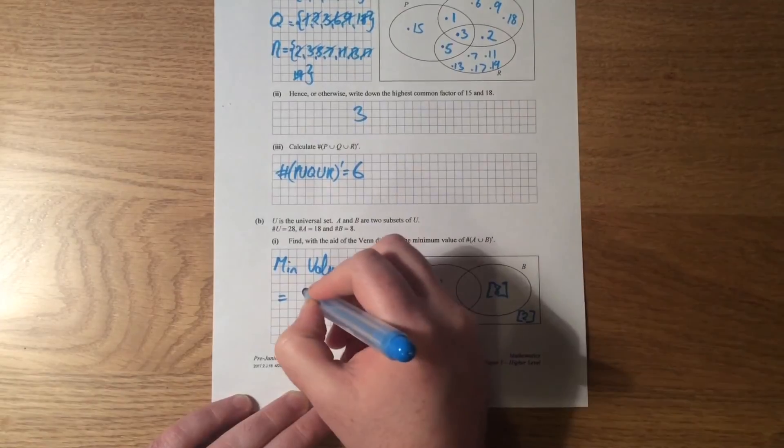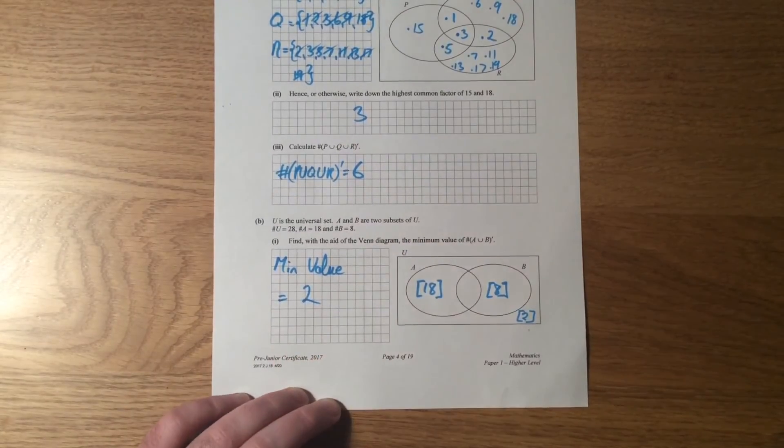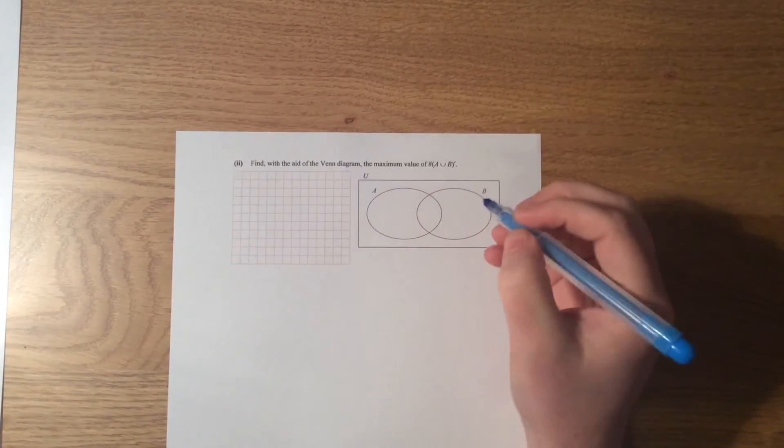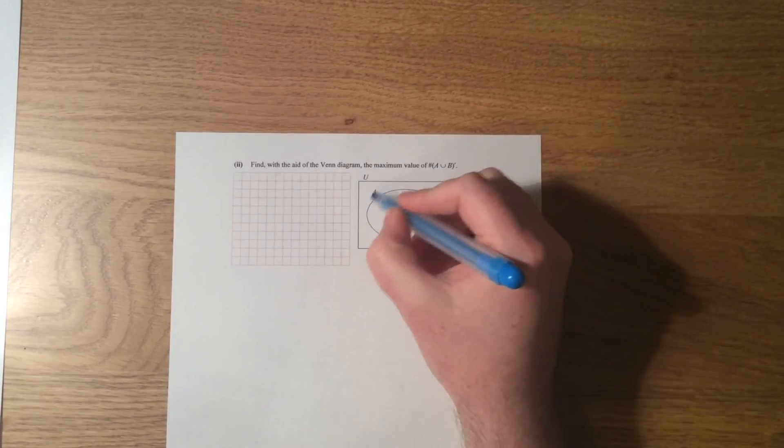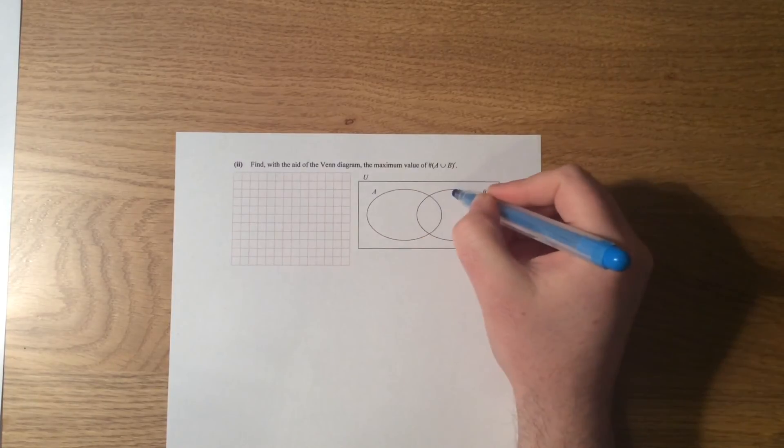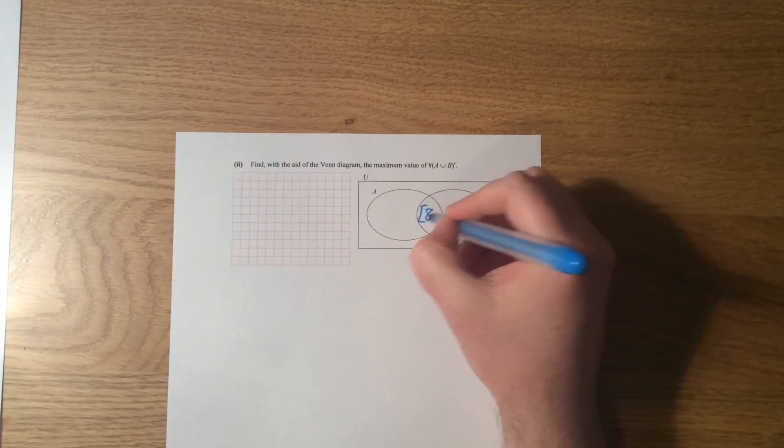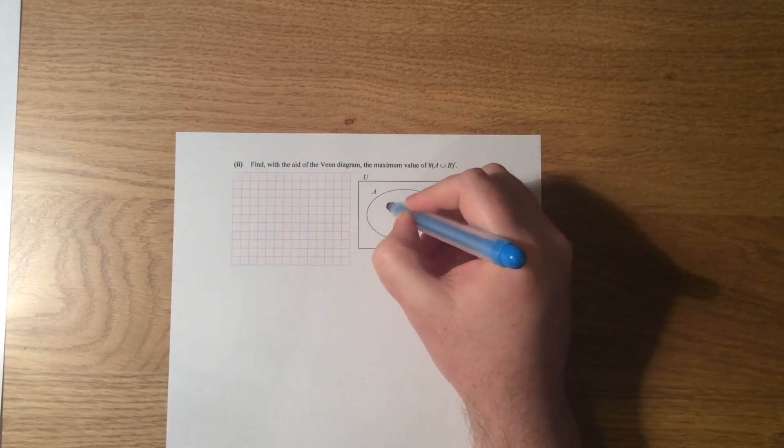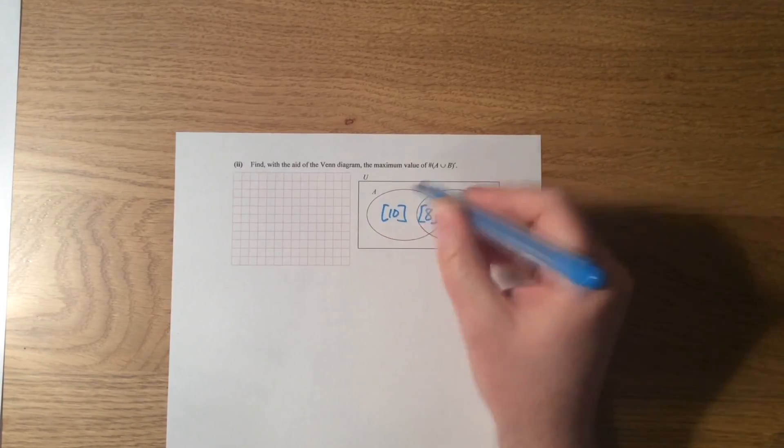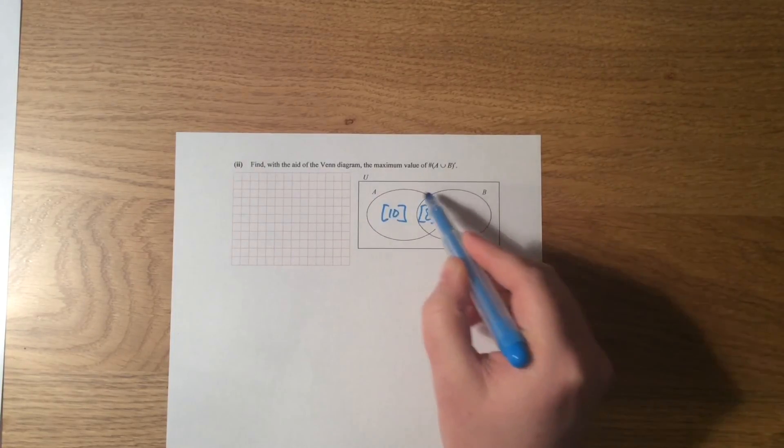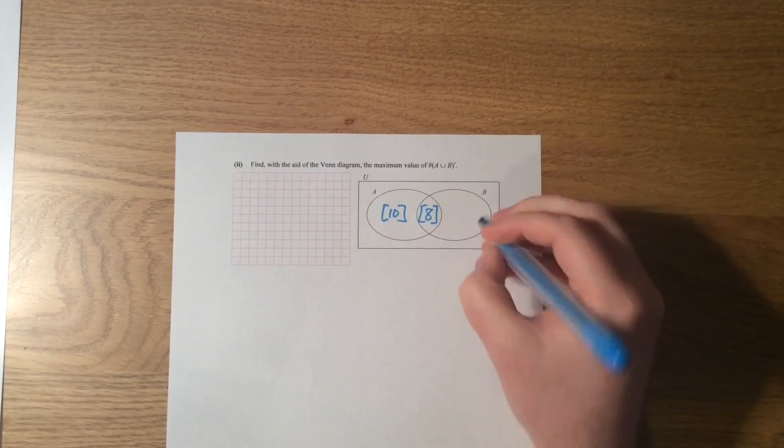Okay, and if we look at the last part of this then, it says find with the aid of a diagram the max value. Well, A has to equal 18 and B has to equal 8. What if all 8 elements in B are also in A? So that would mean that there are 10 elements here. Think about that now. That means 18 are still in A and 8 are still in B, but all together there's 18 elements, so that means that there are 10 elements left out here.